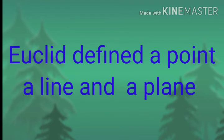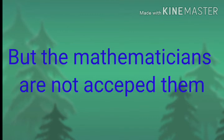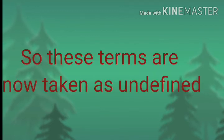Though Euclid defined a point, a line and a plane, the definitions are not accepted by mathematicians. Therefore, these terms are now taken as undefined terms. Because even though Euclid defined a point, a line and a surface, those definitions are not accepted by mathematicians, so they are treated as undefined terms nowadays.